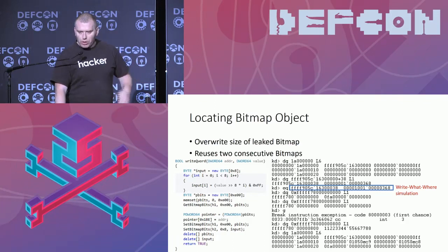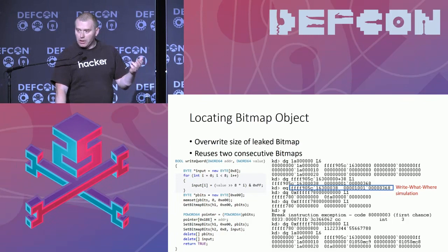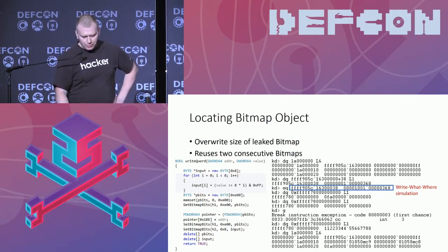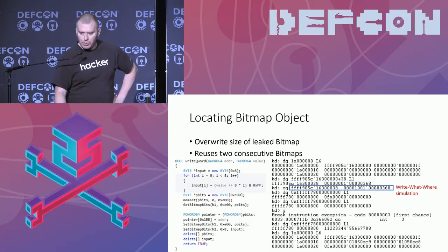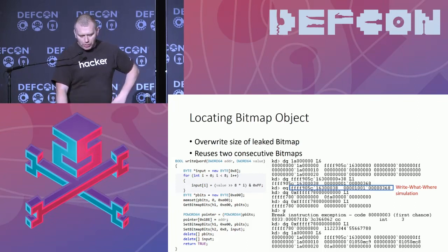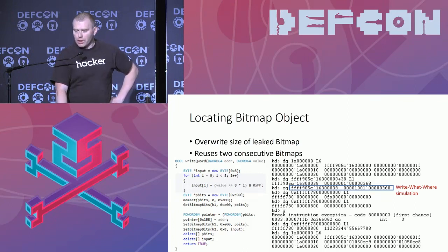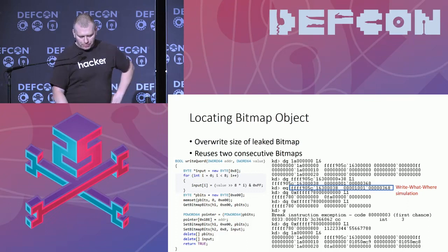So even though Microsoft removed the addresses from the table, it's not really needed. As you can see here, by simulating the write-what-where and just overwriting the length, and then executing the code, it's possible to read out the content of the kernel and also write to the kernel.